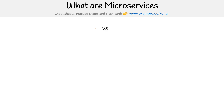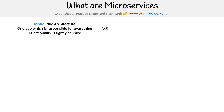Let's talk about microservice architecture and understand that we need to compare it against monolithic architecture. Monolithic architecture is one app which is responsible for everything, and the functionality is tightly coupled.